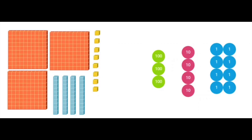Some differences between the two tools: base 10 blocks vary in size while place value disks are all the same size. Base 10 blocks show the number of ones composed to form the 100 and the 10, but place value disks are labeled with values. Base 10 blocks can be arranged to show how ones compose a 10 and a 10 to form a 100; however, place value disks do not show the 10 to 1 relationship concretely.